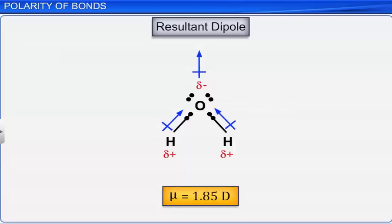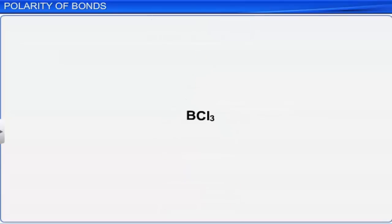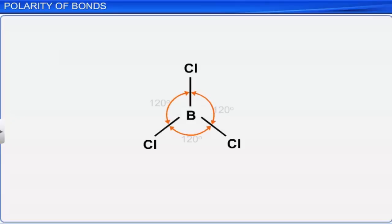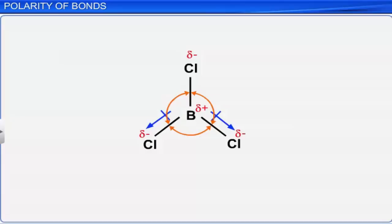Now let us take the example of a boron trichloride molecule. In this molecule, three boron-chlorine bonds are present at an angle of 120 degrees to one another. The resultant dipole moment of any two boron-chlorine bonds is equal and opposite to the third boron-chlorine bond dipole. Hence, the net dipole moment is equal to zero.